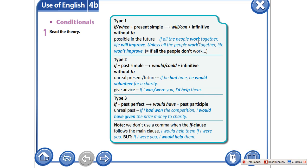Например: if all the people work together — если все люди будут работать вместе — life will improve. Жизнь улучшится. Unless all the people work together, life won't improve. Если люди не начнут работать вместе, жизнь не улучшится. Unless означает «если не».